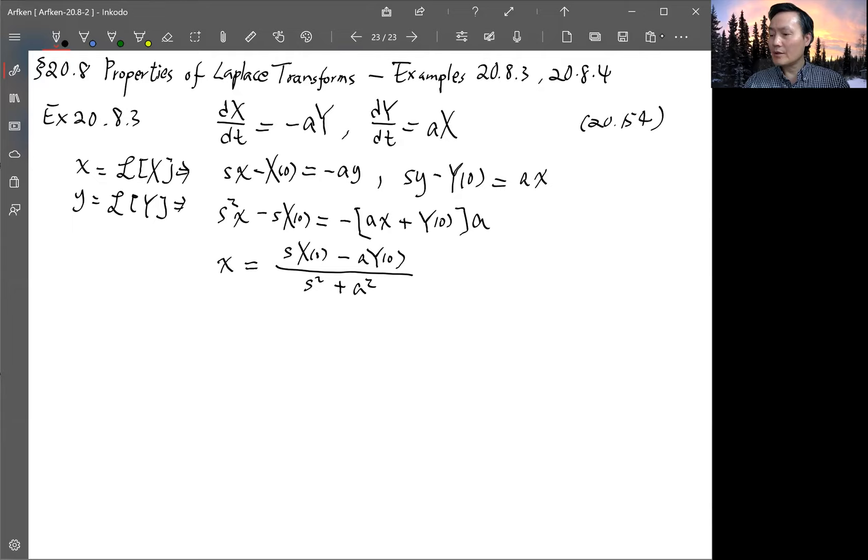So now we recognize that the form of this Laplace transform is similar to the transform of cosine and sine and listed in the table that we look up before. So table 20.1. So these two are the number eight and number nine. Except that instead of k we have A.